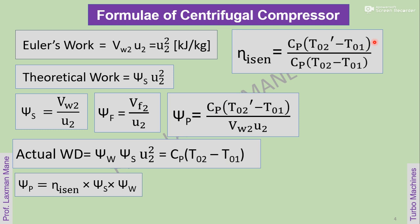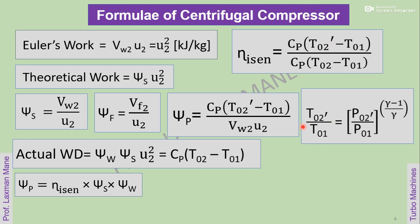Isentropic efficiency is the ratio of isentropic work to actual work, that is Cp into (T02' minus T01) divided by Cp into (T02 minus T01). For the isentropic process, the ratio of temperatures is equal to the ratio of pressures to the power (gamma minus 1) upon gamma. So T02' divided by T01 is equal to (P02' divided by P01) raised to (gamma minus 1) upon gamma, where gamma is the adiabatic index of air.